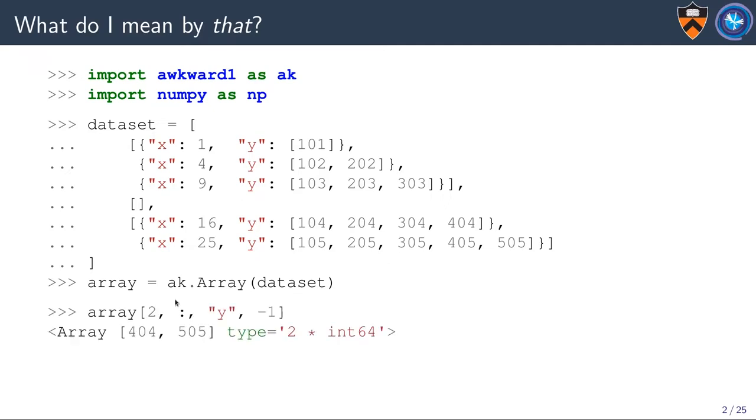For instance, you'd be able to do operations on it as though it were a NumPy array, like multi-dimensional slices. Here, we want to take the array and pick elements 2, that's this last list, everything inside, field y, and then the last element of the field y lists, 404 and 505. So we get that as a new array, and that's a multi-dimensional slice.